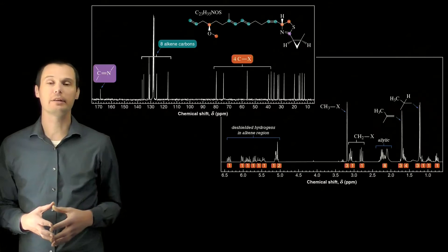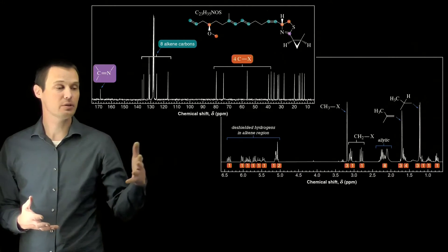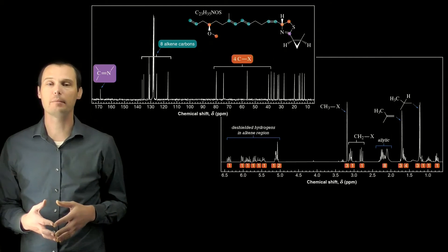How do we know from the proton NMR that it does not? Notice that the x-axis of the proton NMR doesn't even go out to 7. There are no signals between 7 and 8 in the proton NMR.